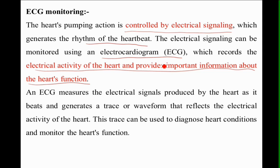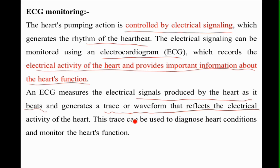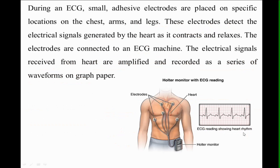An ECG measures the electrical signals produced by the heart as it beats and generates a trace or waveform that reflects the electrical activity of the heartbeat. Just as brain activity is observed by an electroencephalogram, here the heart activity information is collected by an electrocardiogram. This trace can be used to diagnose heart conditions and monitor heart function.